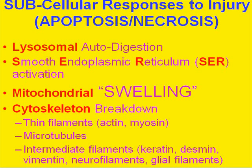When a human dies, tissues and organs die. When tissues and organs die, cells die. When cells die, organelles within the cell die. For example, the lysosomes may combine with things within the cell to digest substances by releasing lysosomal enzymes. The smooth endoplasmic reticulum classically becomes very activated in cell injury, death, apoptosis, and necrosis as well.